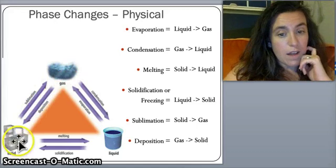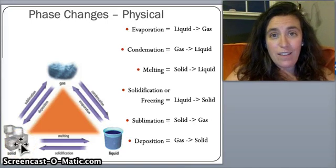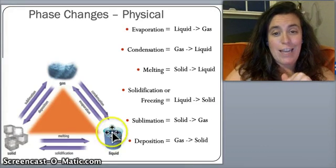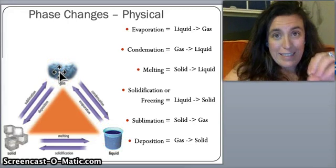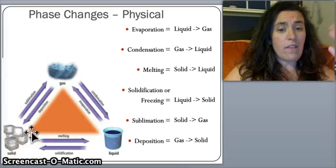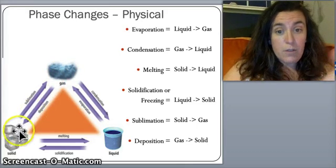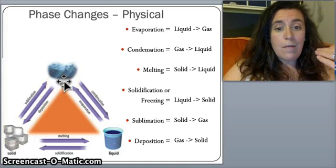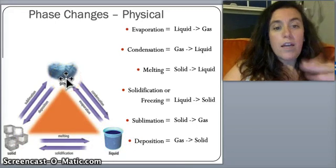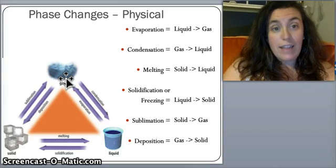Deposition is the reverse of sublimation — going from gas directly into a solid. Every substance has a boiling point, the point at which it goes into a gas, and a freezing point, the point at which it becomes a solid. These vary by substance: carbon dioxide becomes a gas at room temperature, while liquid water needs 100 degrees Celsius to become a gas.